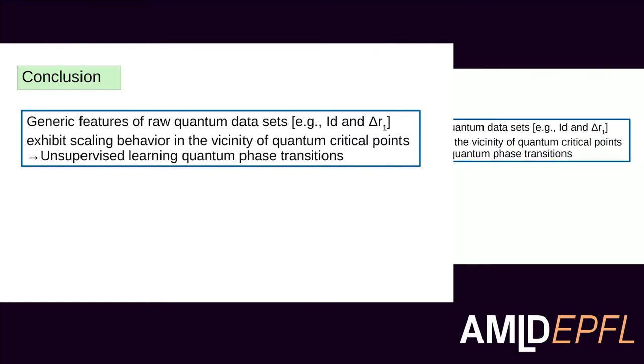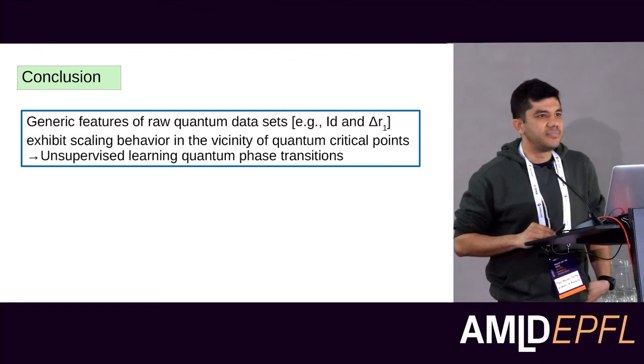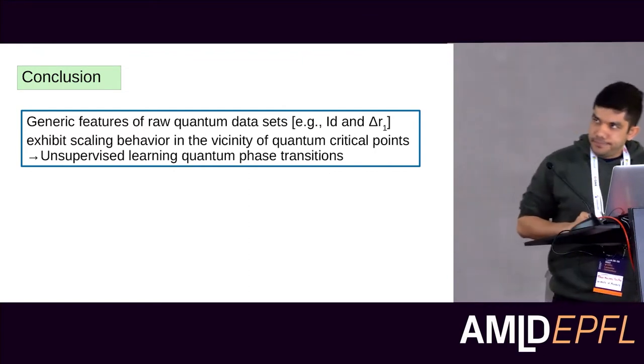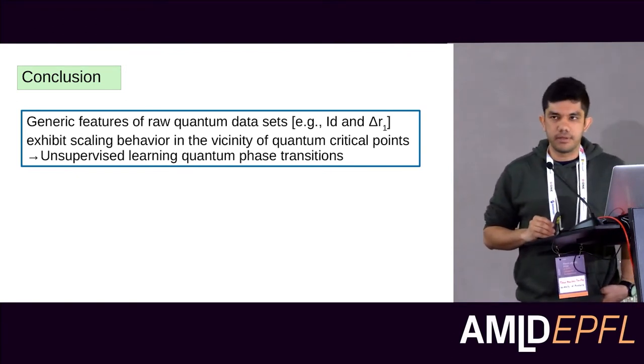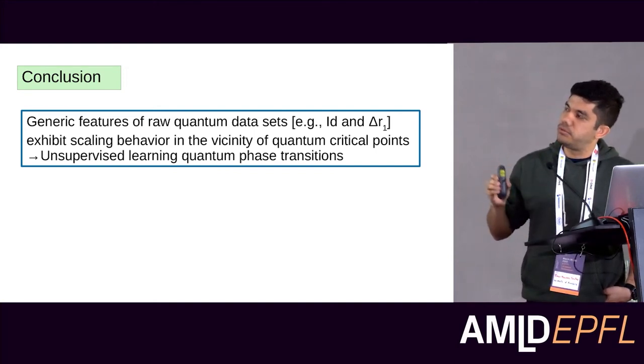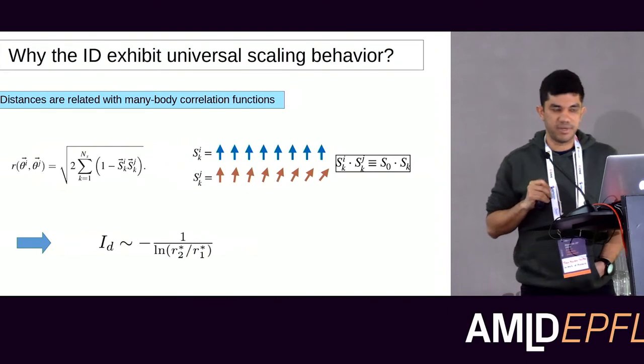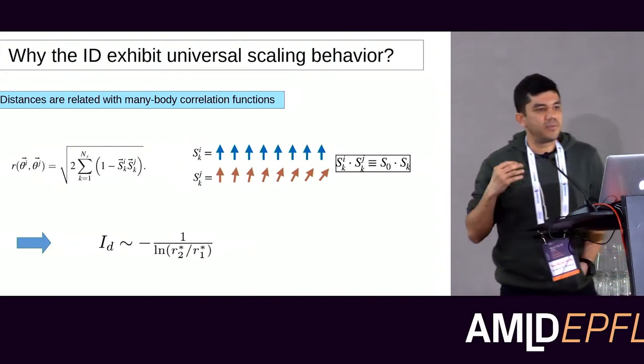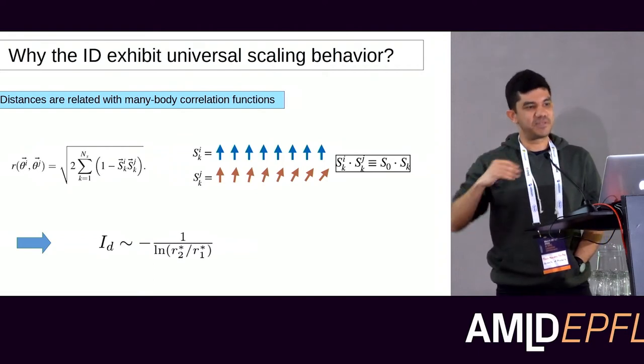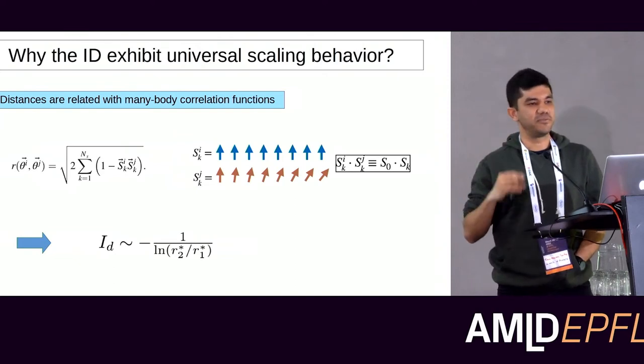Question: Is there a physical reason for the minimum of the intrinsic dimension near the phase transition? Answer: I don't have a fully intuitive explanation yet. The basic idea is that you can write the intrinsic dimension approximately as the log of the ratio of distances r2 and r1, and in certain cases this scales with the correlation length. Since the correlation length diverges at the critical point, that would explain the minimum — but I haven't found a fully intuitive picture yet.